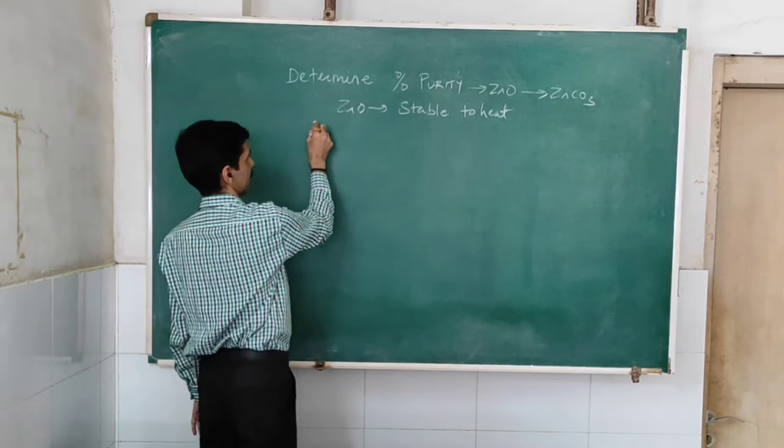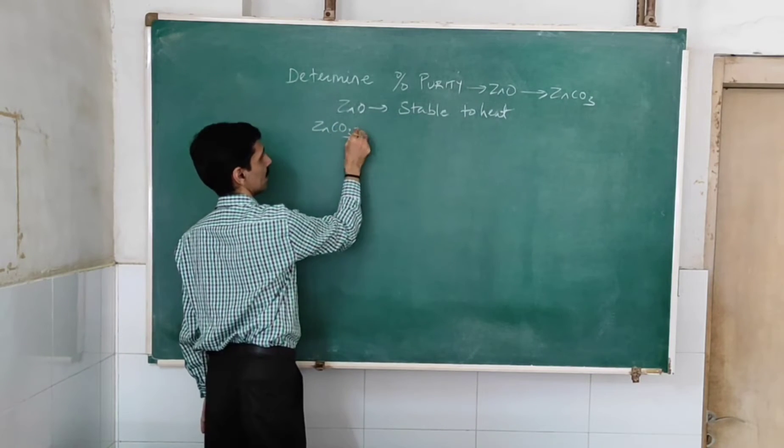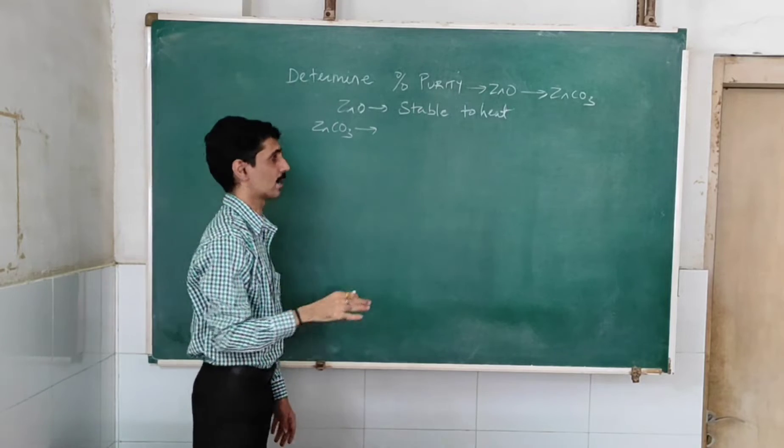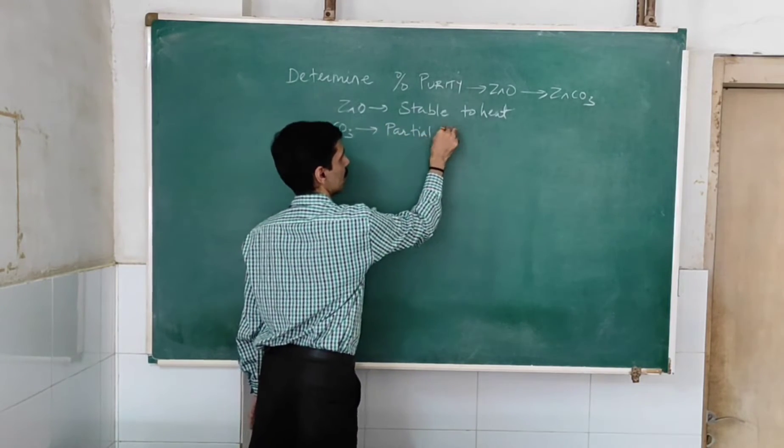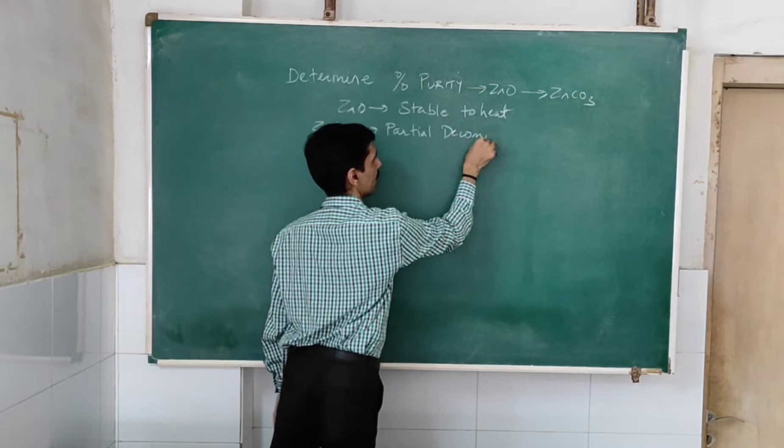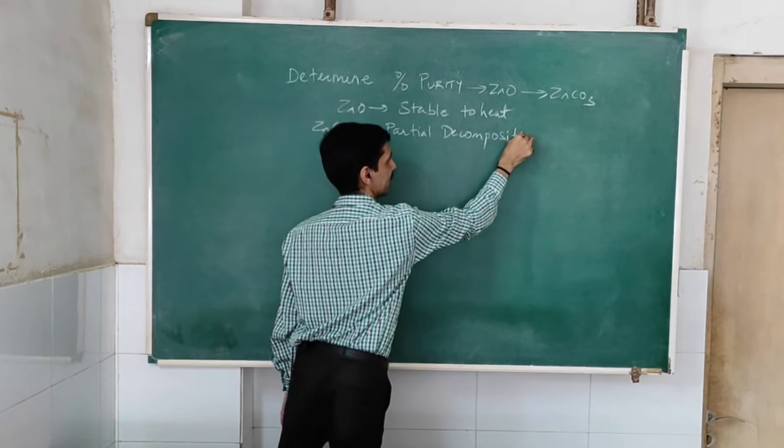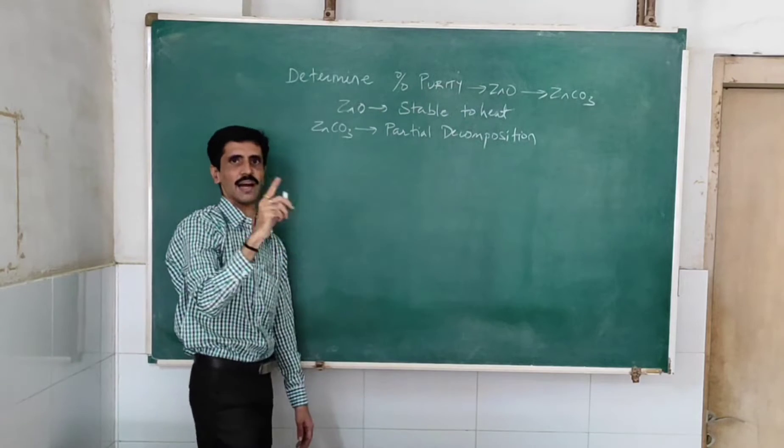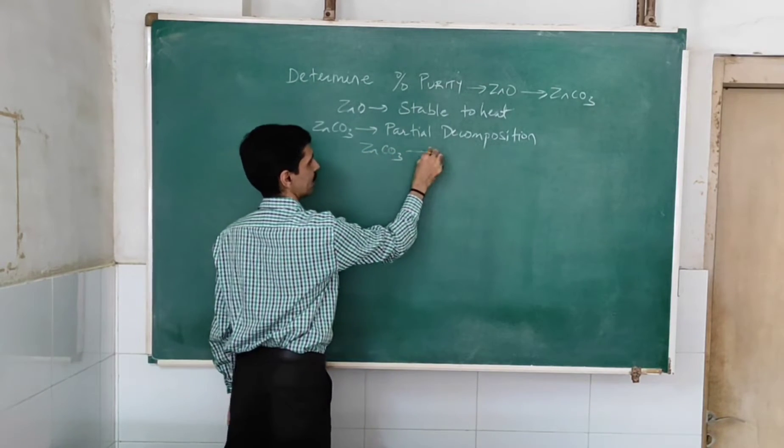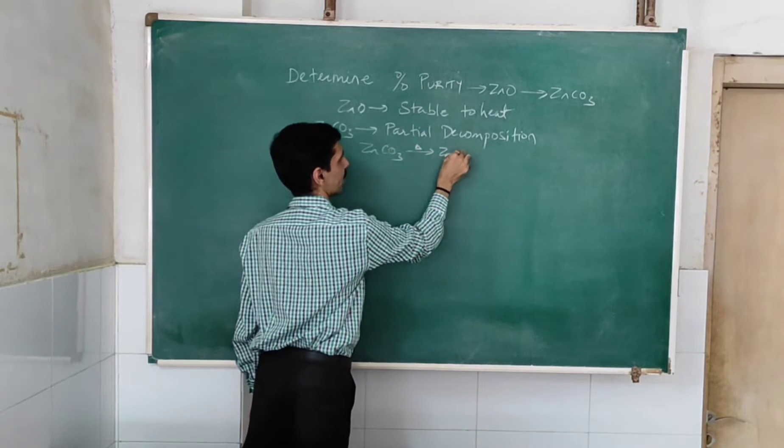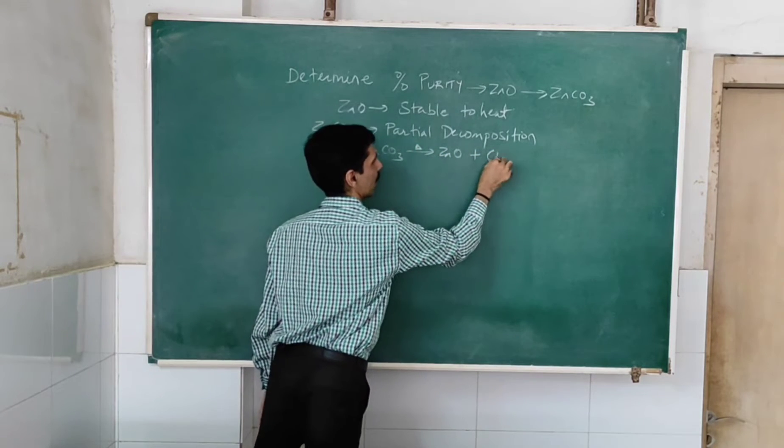Zinc carbonate, ZnCO3, undergoes a partial decomposition on heating. I will explain how it is partial. That is, zinc carbonate on heating gives you zinc oxide and carbon dioxide.